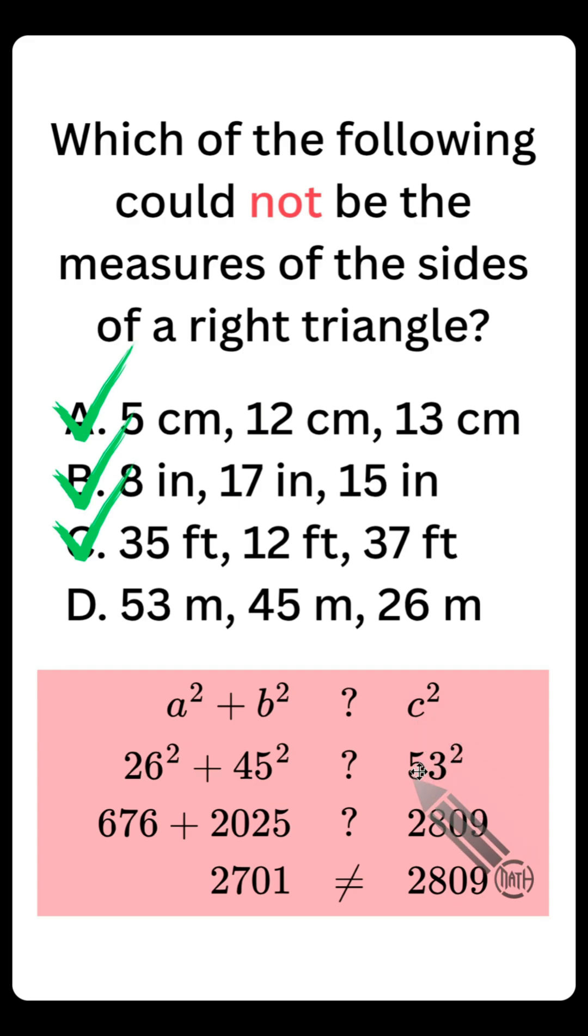Be careful again, 53. That's going to be our C since it's the longest side, our hypotenuse. The other two sides are our A and B, and I didn't mention it up until this point, but it doesn't really matter which one you make A or B. What does matter is that C is the longest side, your hypotenuse. And when you work all this out, A squared plus B squared is not equal to C squared. And since we wanted the one that could not be the measures of the sides of a right triangle, choice D is the correct answer.